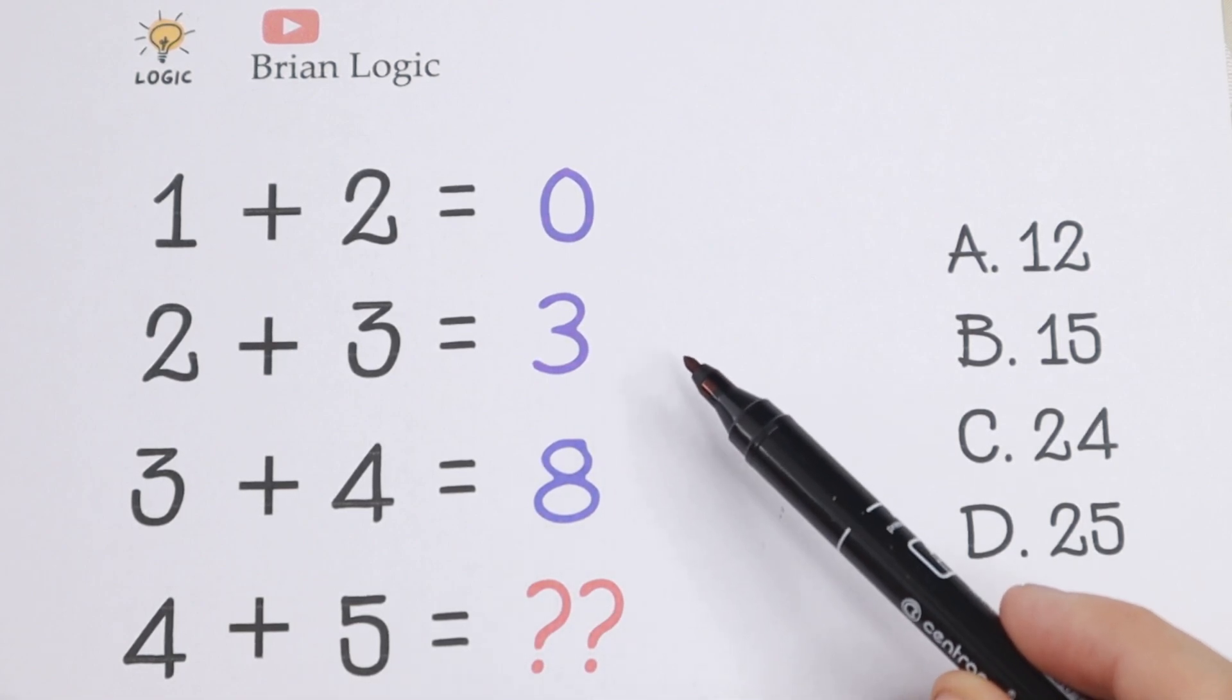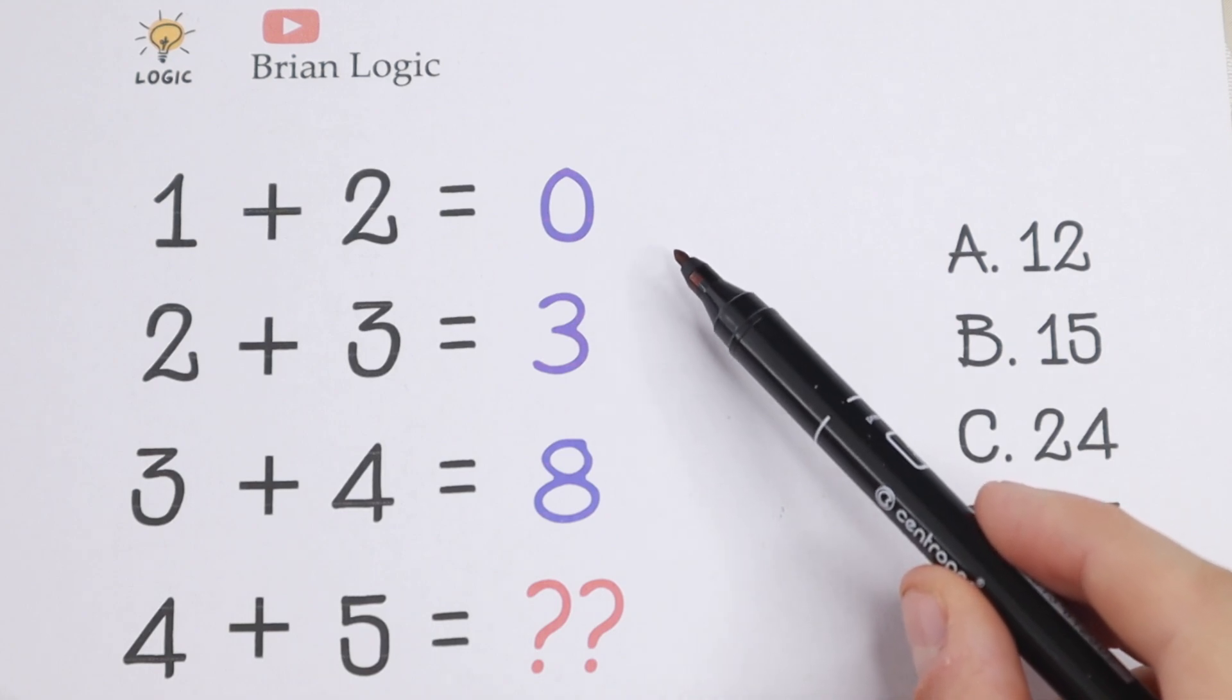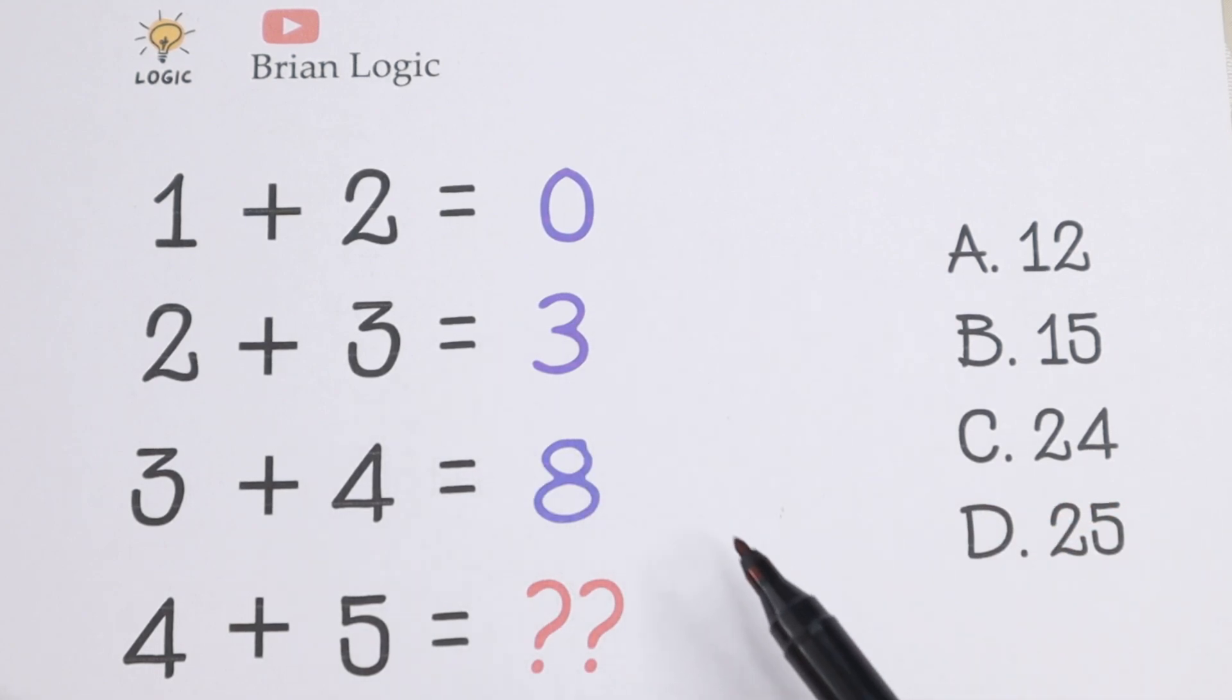So 3 plus 4 equal to 8, 2 plus 3 equal to 3 and 1 plus 2 equal to 0. So we need to find the pattern between all of these numbers and right here we can find an option. So A, B, C and D.